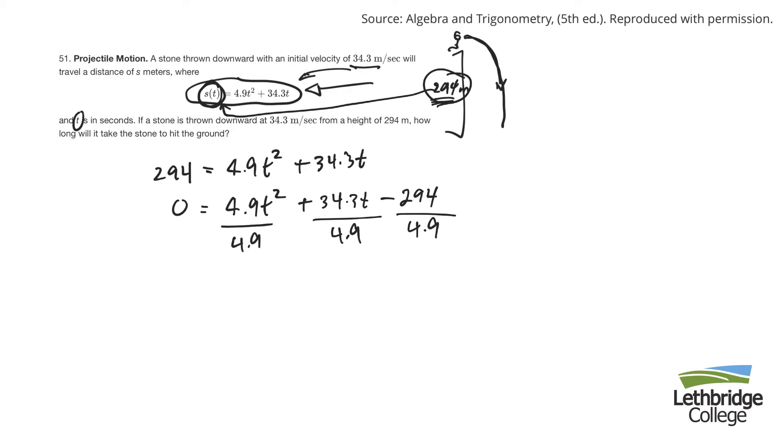So 4.9 divided by 4.9 would just be T squared plus, okay, 34.3 divided by 4.9. My calculator's going funny. 34.3 divided by 4.9. Oh, it comes out to 7. Nice. Minus 294 divided by 4.9, 60.